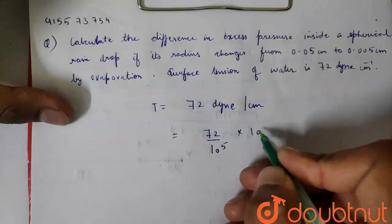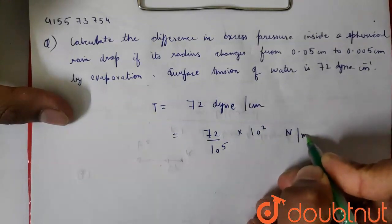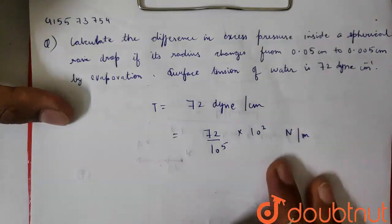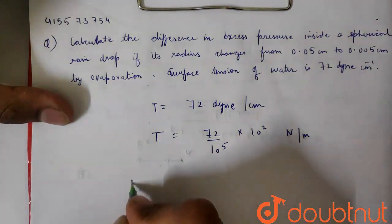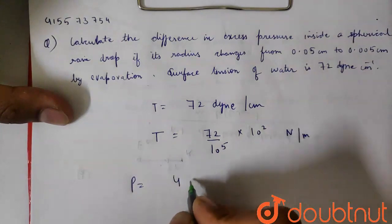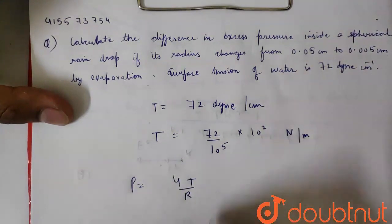And into 10 to the power 2. This will convert into newton per meter. So the surface tension is like this. The excess pressure inside a spherical rain drop is 4T by r.